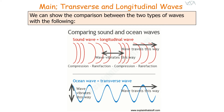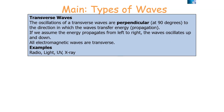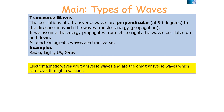Both types of waves transfer energy, but the particles oscillate in different directions relative to that energy transfer. Transverse waves are oscillations perpendicular to the direction of energy propagation — if the energy travels left to right, the waves oscillate up and down. All electromagnetic waves are transverse, and examples include radio waves, light waves, UV, and X-rays. Electromagnetic waves are the only transverse waves that can travel through a vacuum.